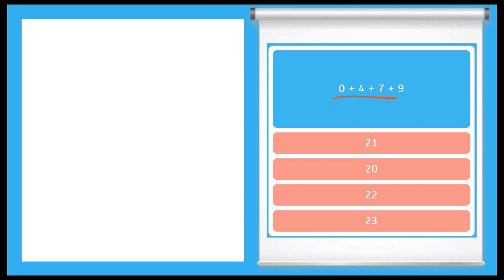So I have 0 plus 4 plus 7 plus 9. So let me write that here: 0, 4, 7, and 9. To add these together I'll first start with my 9 and my 7. I know none of these numbers can go together to make 10, so I will just add them together in order. So 9 and 7 make 16.